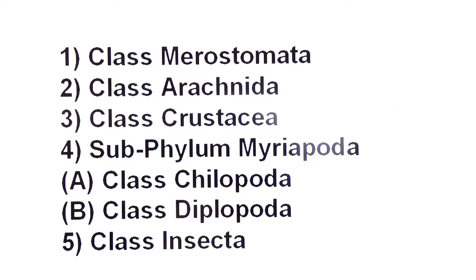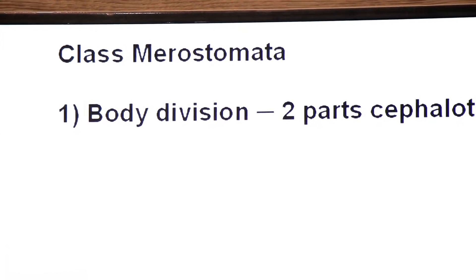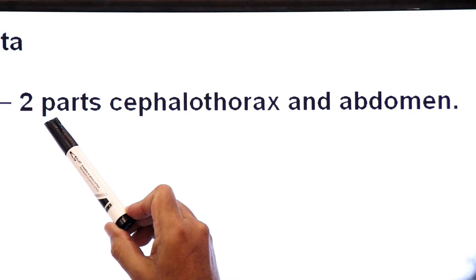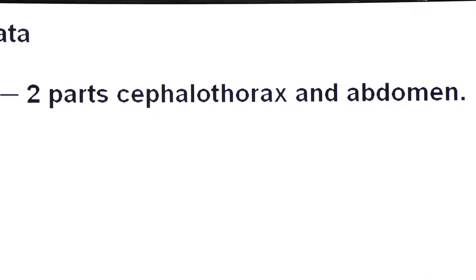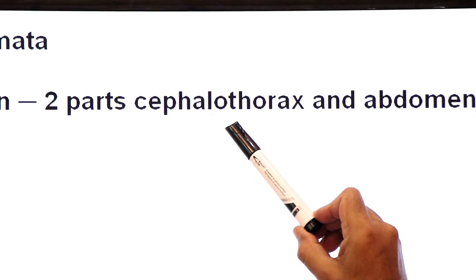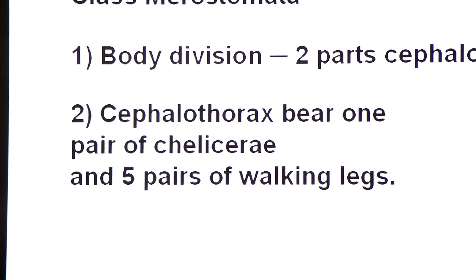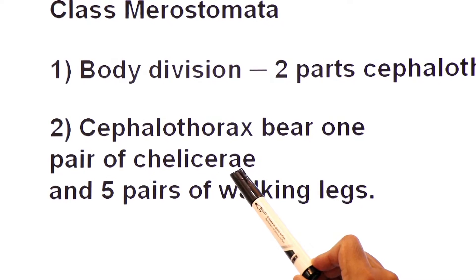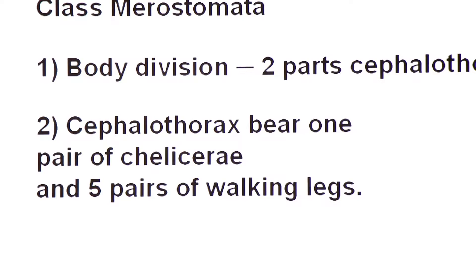Let's start from class number one: class Merostomata. First, body division — in this class the body of animals is divided into two parts: cephalothorax and abdomen. When the head and thorax are fused together, they are termed cephalothorax. The cephalothorax bears one pair of chelicerae and five pairs of walking legs.